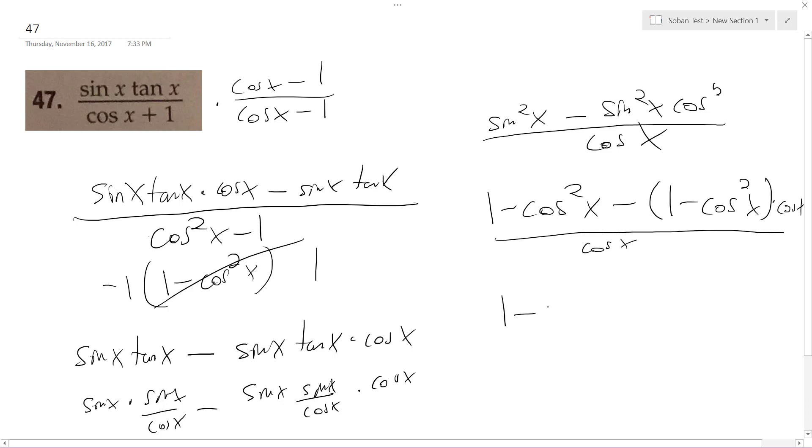So, 1 minus cosine squared x. Minus minus 1 minus cosine x plus cosine squared x. All over cosine x.